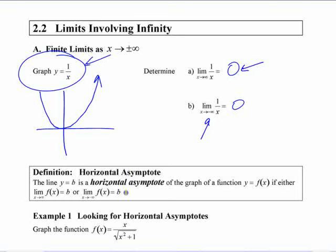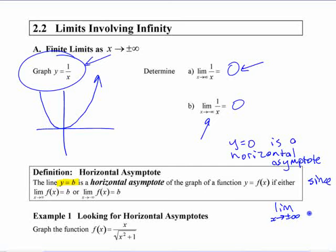So this definition down here, the line y equals b. So in this case, y equals 0 is a horizontal asymptote, since the limit as x approaches plus or minus infinity is a finite number, as in it's not infinity. It doesn't just keep getting bigger or smaller. That's what this definition says.